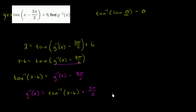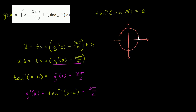Let's think about the domain of g inverse of x by thinking about what tangent is doing. The tangent function — if we imagine a unit circle with the x-axis and y-axis — if you form an angle theta, the tangent of theta is essentially the slope of the terminal ray of the angle formed by that ray and the positive x-axis.